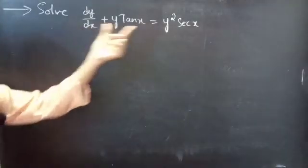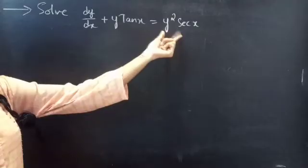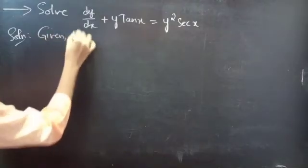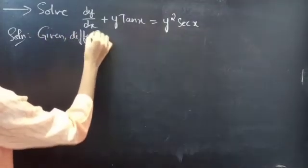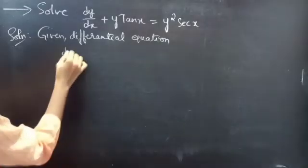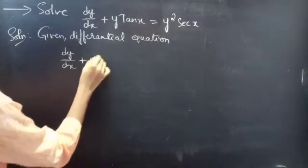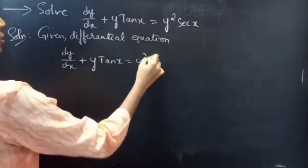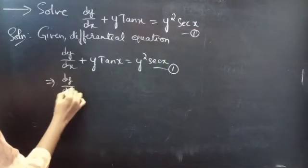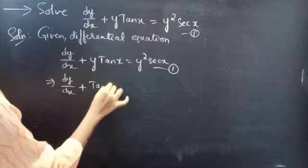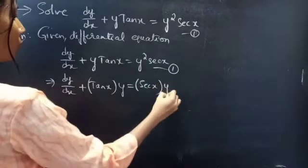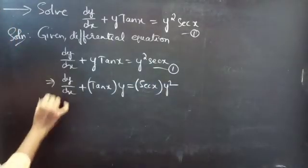Problem: Solve dy/dx plus y times tan x equals y squared secant x. Given differential equation: dy/dx plus y tan x equals y squared secant x. We can write this as dy/dx plus tan x times y equals secant x times y squared, which is Bernoulli's equation in y.